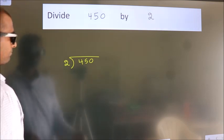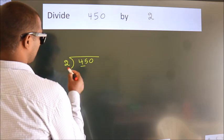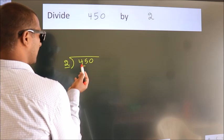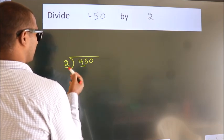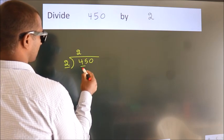Next. Here we have 4. Here 2. When do we get 4? In 2 table. 2 2s, 4.